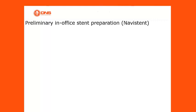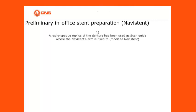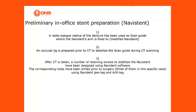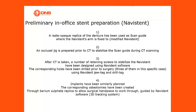For the preliminary in-office Navistent preparation: first, a radiopaque replica of the denture was used as a scan guide to which the Navistent's arm is fixed — this is the modified Navistent. Second, an occlusal jig is prepared prior to CT scanning to stabilize the scan guide. Third, after CT is taken, a number of retaining screws to stabilize the Navistent were designed using Navident software. The corresponding holes were drilled prior to surgery — three of them in this specific case — using Navident jaw tag and drill tag.